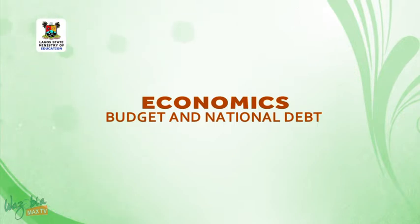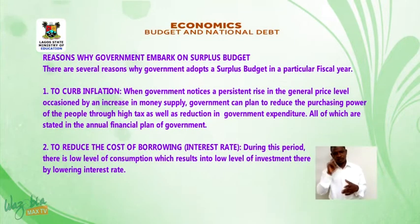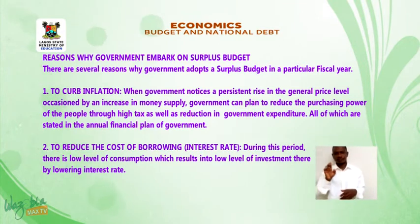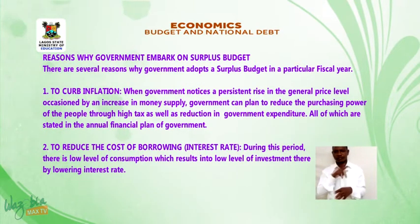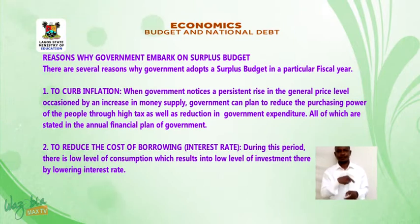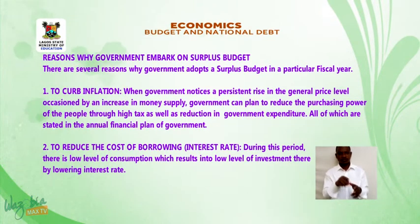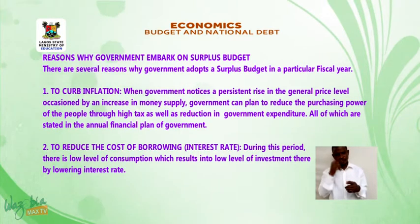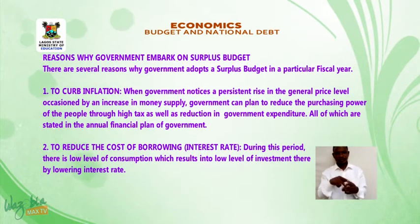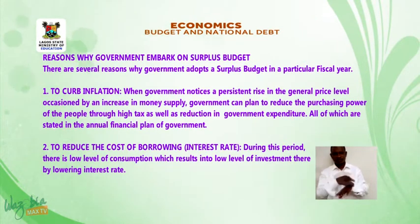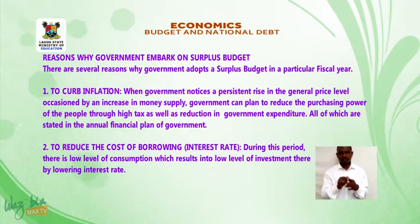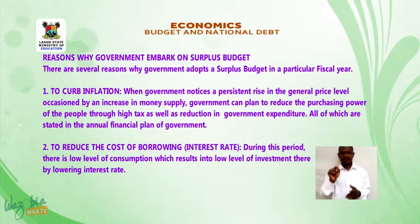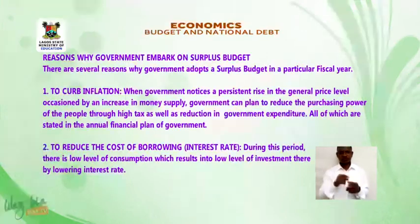Reasons why governments embark on surplus budget: There are several reasons why government adopts a surplus budget in a particular fiscal year. One, to curb inflation — when government notices a persistent rise in the general price level occasioned by increase in money supply, government can plan to reduce the purchasing power of the people through high taxes as well as reduction in government expenditure.